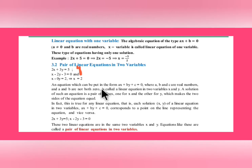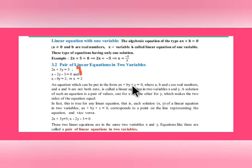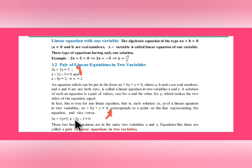The solution for a pair of equations means finding the values of x and y. If you find one value, you can substitute it into the other equation to get the second value. A linear equation ax + by + c = 0 represents a straight line on a graph. So 2x + 3y = 5 represents one straight line, and another equation represents another line — when plotted on a graph.